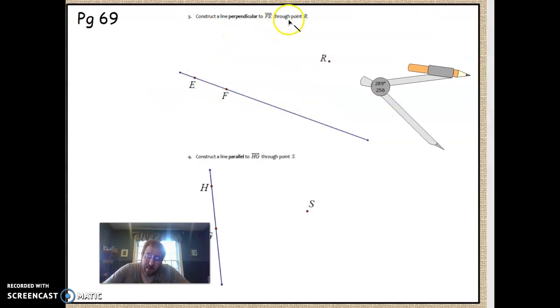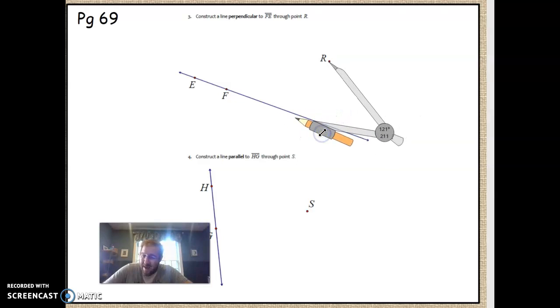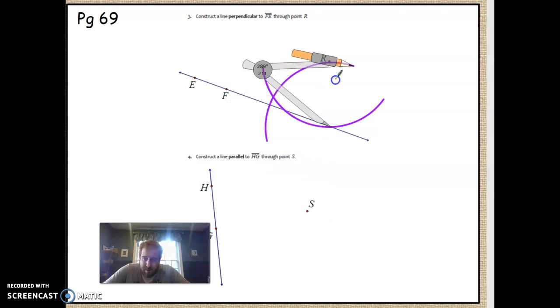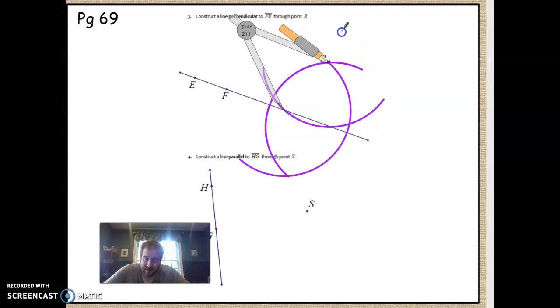Construct a line perpendicular to the line FE through point R. This time, it's pretty obvious that you're not going to use points E or F for anything. Start by putting your fixed point on R and then make sure that your compass is open a little bit past the line so that it's going to intersect the line twice. If it doesn't intersect the line, you will just need to make it bigger and try again. Then I'm going to make a perpendicular bisector from both sides. There's from this side and then from the other point of intersection, make the exact same arc.